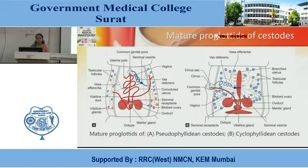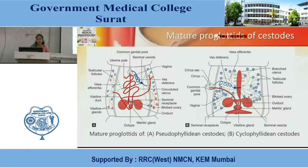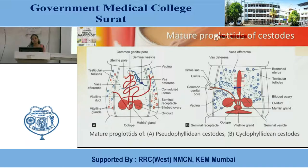Mature proglottides of the two types of cestodes — Pseudophyllidean and Cyclophyllidean. Pseudophyllidean cestodes contain: common genital pores, seminal vesicles, vagina, vas deferens, convoluted uterus, seminal receptacles, bilobed ovary, oviduct, vitelline ducts, vas efferentia, and testicular follicles. Cyclophyllidean cestodes contain: vas deferens, common genital pores, vagina, branched uterus, testicular follicles, bilobed ovary, oviduct, Mehlis's gland, vitelline gland, and seminal vesicle.